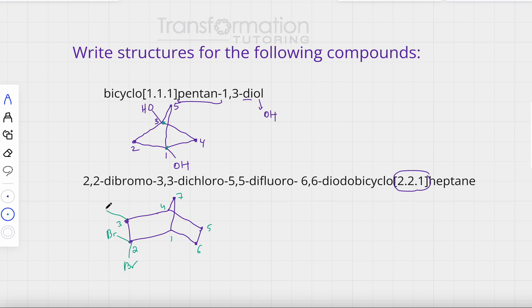Now I have 5,5-difluoro, so on my carbon five I have two fluorine groups - one fluorine and another. And on carbon six I have two iodines. So let's draw my iodines - one iodine, sorry they kind of overset each other, and then another iodine. And this is my molecule.